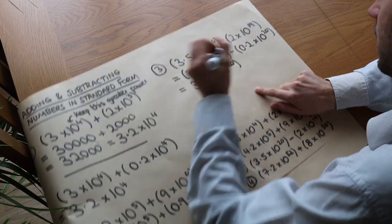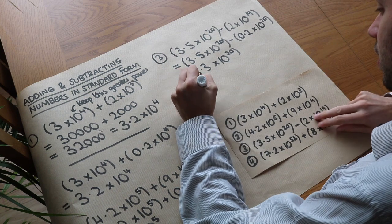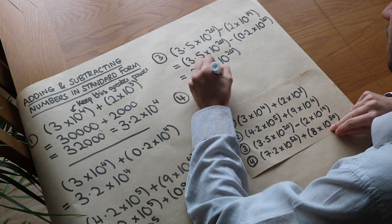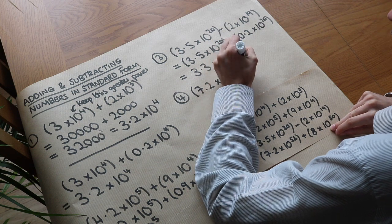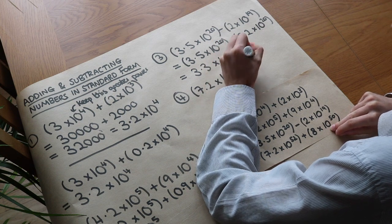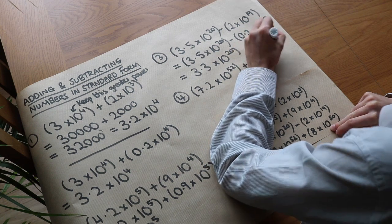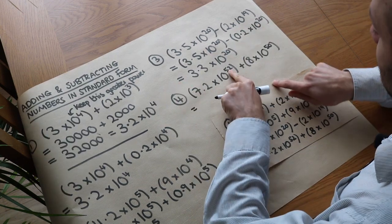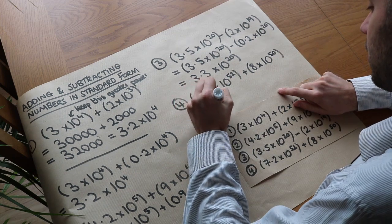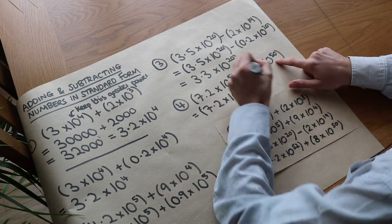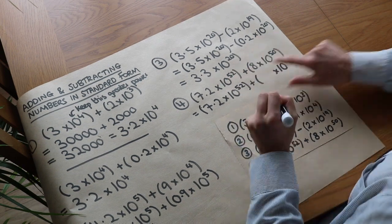And the very last one, we've got 7.2 times 10 to the 52. I've purposely made the powers very large. Plus 8 times 10 to the power of 50. Slightly harder, this one. So this is a higher power. That's a higher power than that, so we're going to keep this one the same. But this, we have to change the power by 2, so it's 10 to the power of 52 to match this one.